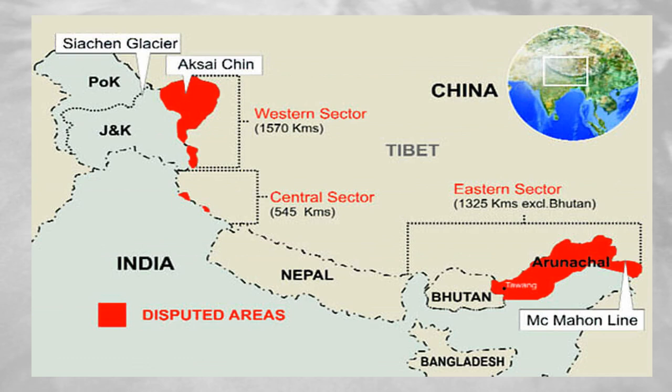From October 20, when China launched attacks in the West, i.e. Aksai Chin, and East, i.e. the North East Frontier Agency — today's Arunachal Pradesh — till November 19, when China announced a unilateral ceasefire, the war lasted less than a month, yet ended an era.